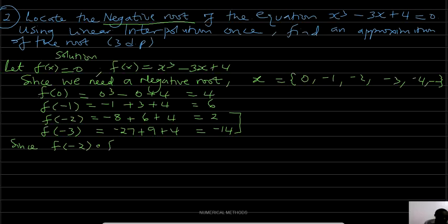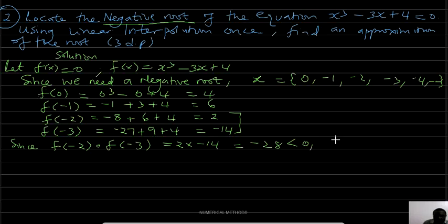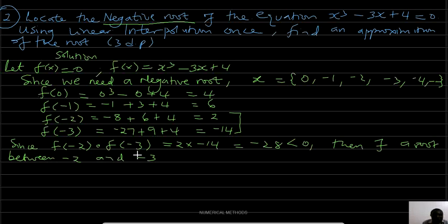Since f(-2) × f(-3) = 2 × (-14) = -28, which is less than 0, there exists a root between -2 and -3.